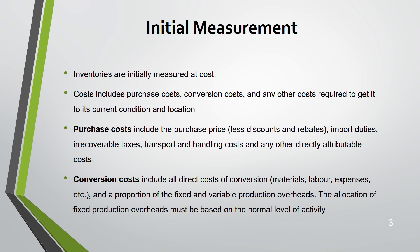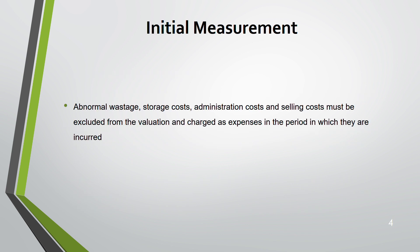The allocation of fixed production overhead must be based on the normal level of activity. Abnormal wastage, storage cost, admin cost, and selling cost are not part of the cost of inventory — these are expenses. Abnormal wastage is taken as an expense; admin expenses are expenses; selling cost and admin cost are not part of inventory — they are charged to profit or loss.